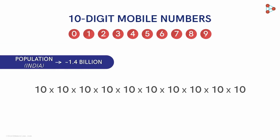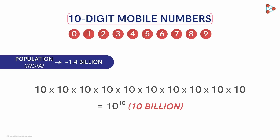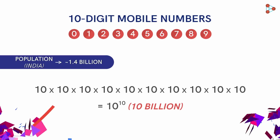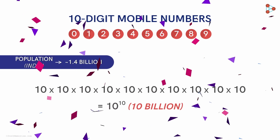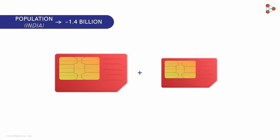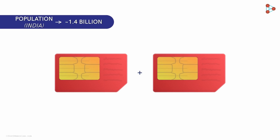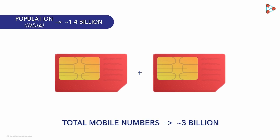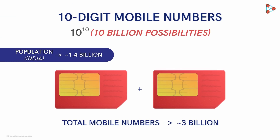After doing the math, the result obtained is 10 billion different possibilities of mobile numbers. That is why 10-digit mobile numbers are considered the standard for now in India. You may say that many users use multiple SIM cards — but no worries! Even if everyone uses 2 SIM cards, the mobile numbers used will be around 3 billion. If you look at the number of mobile numbers at our disposal, we would still have around 7 billion more in reserve. Hence, we do not have to worry at all.